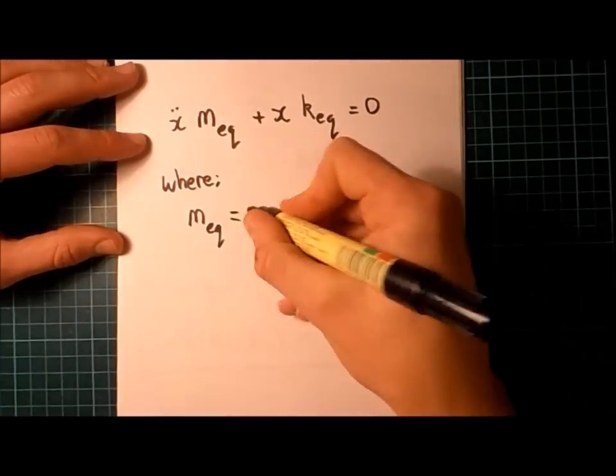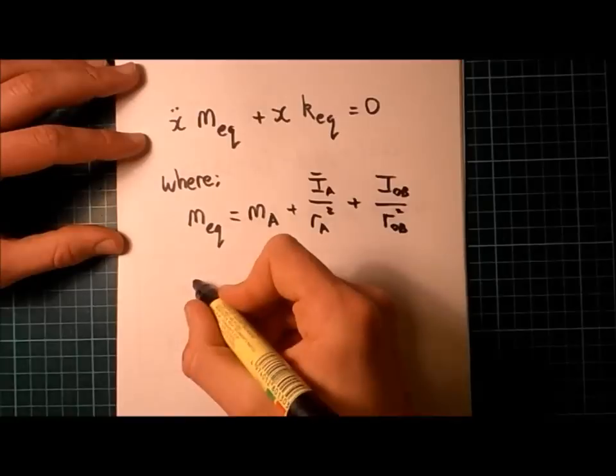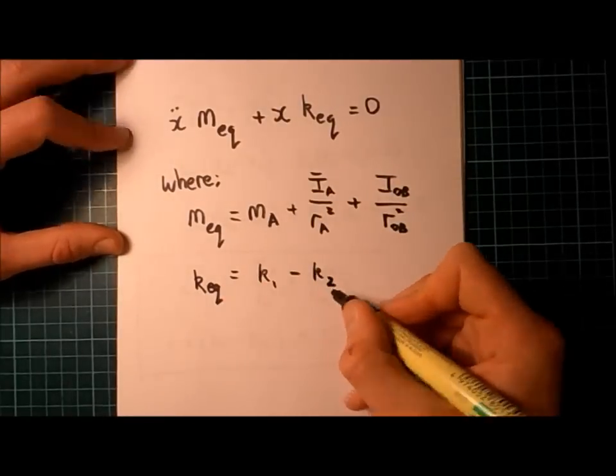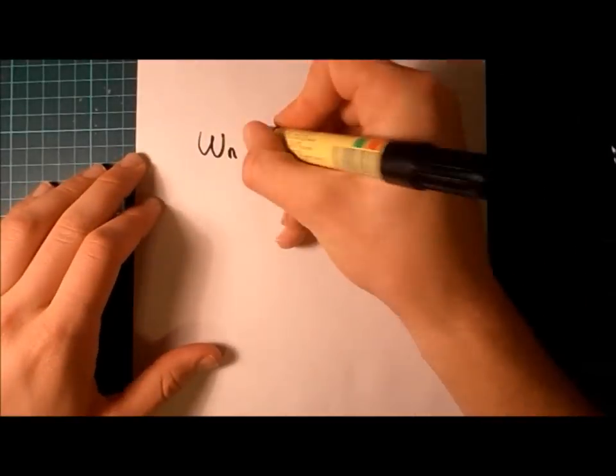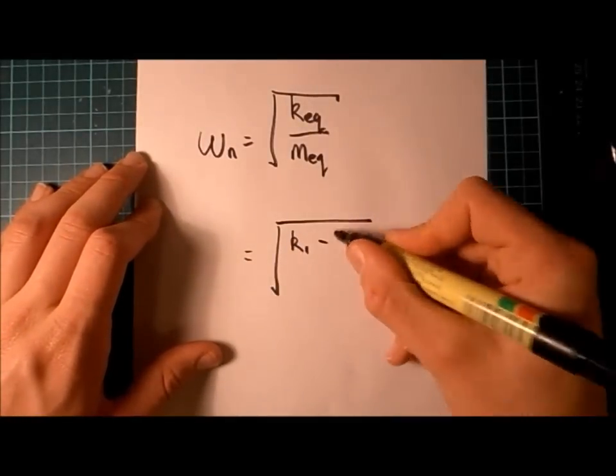So, finally, we can write our equation of motion. Now, normally what we do, is we write it as x double dot times mass equivalent, plus x times k equivalent. And then we state our expressions for mass equivalent, and k equivalent.